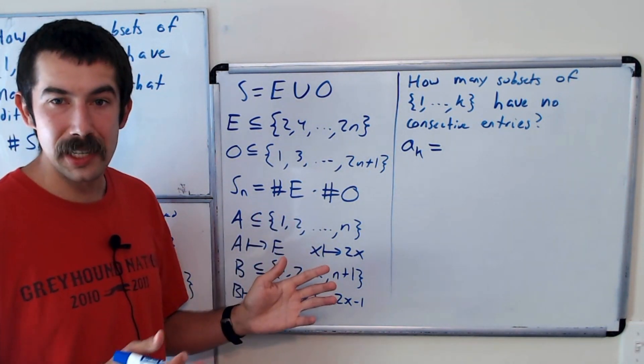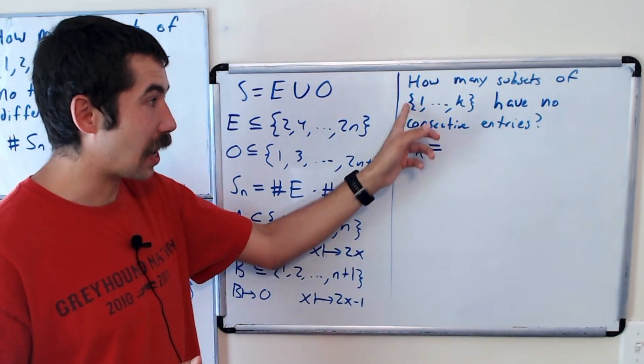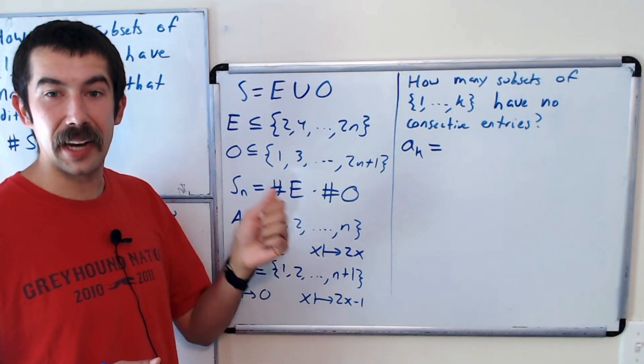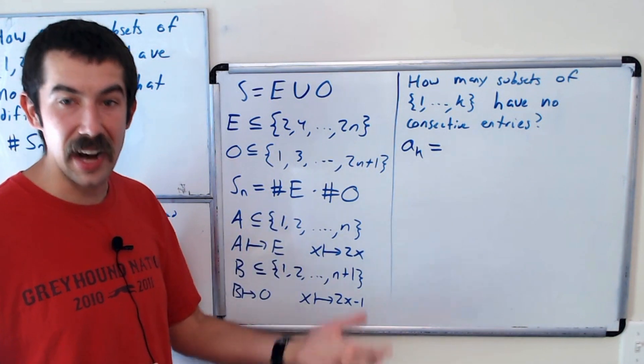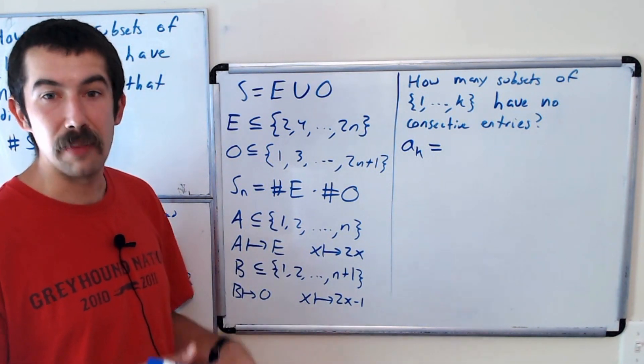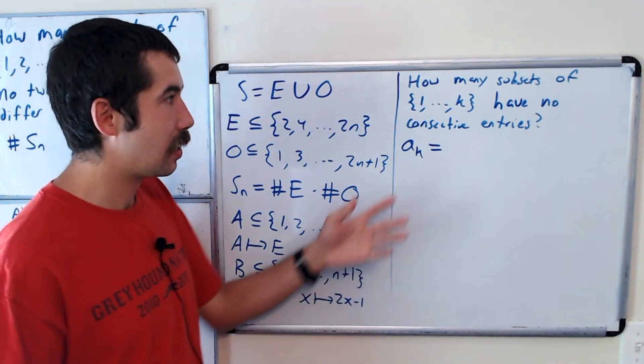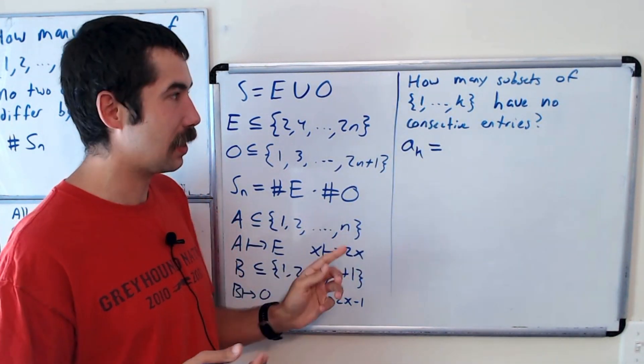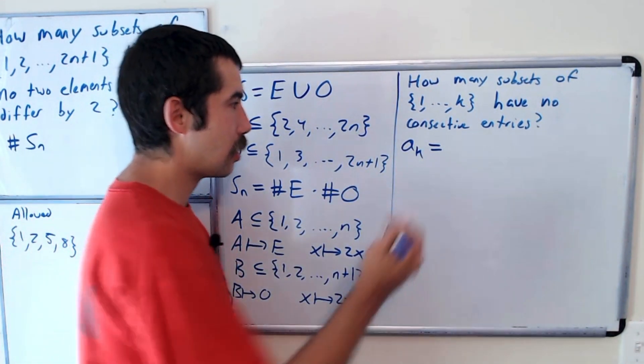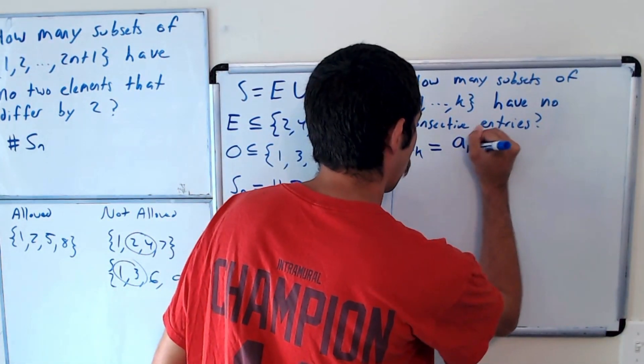So we need a formula for A sub K. And there's going to be two possibilities for any subset that satisfies this property. It's either the case that K is in the subset or K is not in the subset. If K is not in the subset, then really our set is going to be a subset of 1 through K minus 1 that have no consecutive entries. So there's A sub K minus 1 ways to do that.